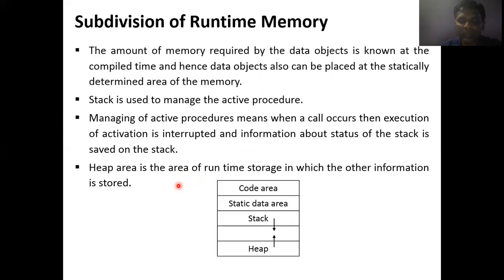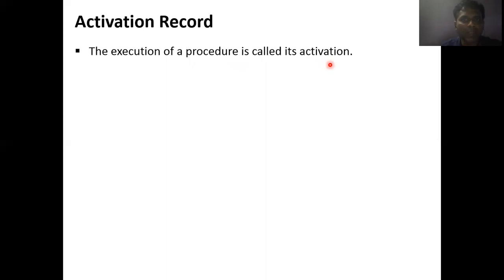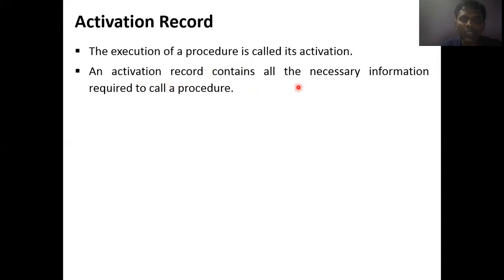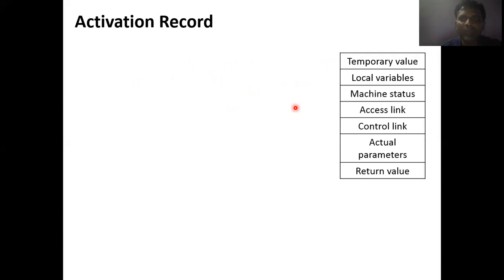An activation record is used whenever we call different kinds of procedures or functions. If you call main, the activation record stores: what is the return value of main, what are the local variables present in main, and what are references to variables not declared in main but used in main. All this data is stored in the activation record. The execution of a procedure is called an activation, and the activation record of that procedure contains all the necessary information required to call that procedure.